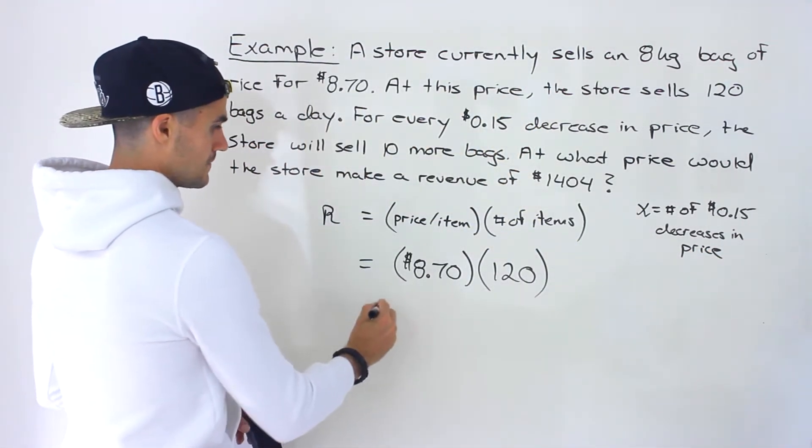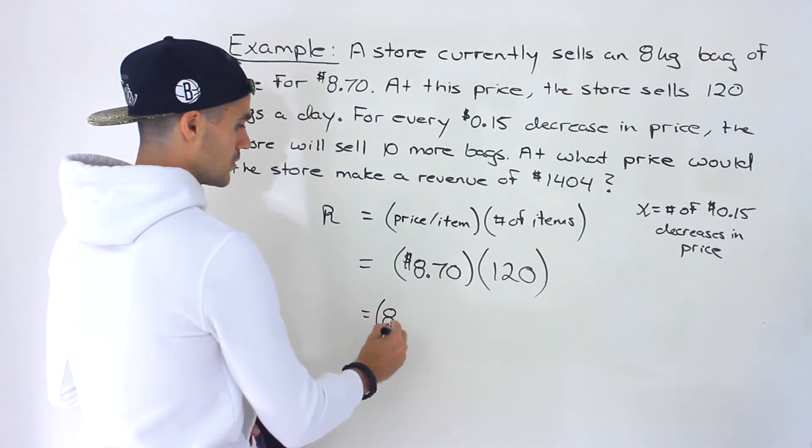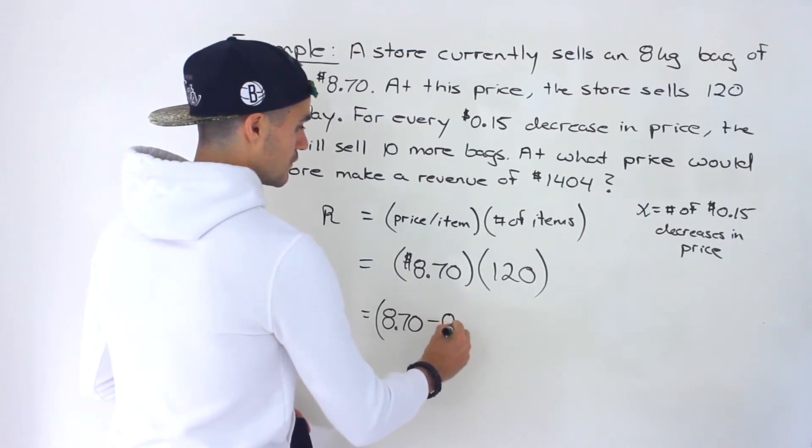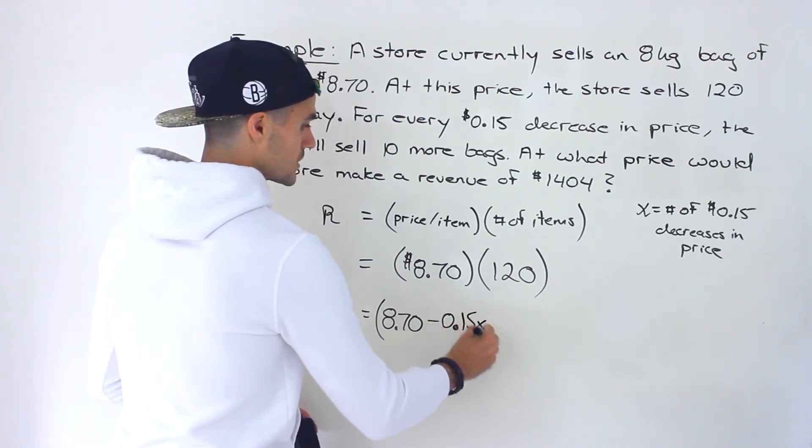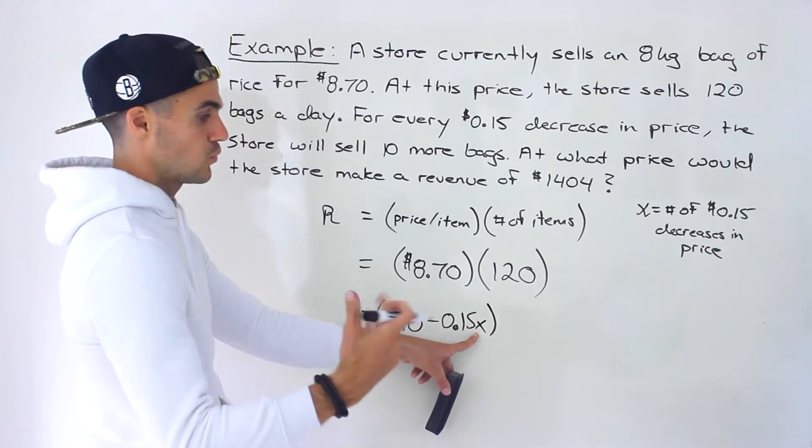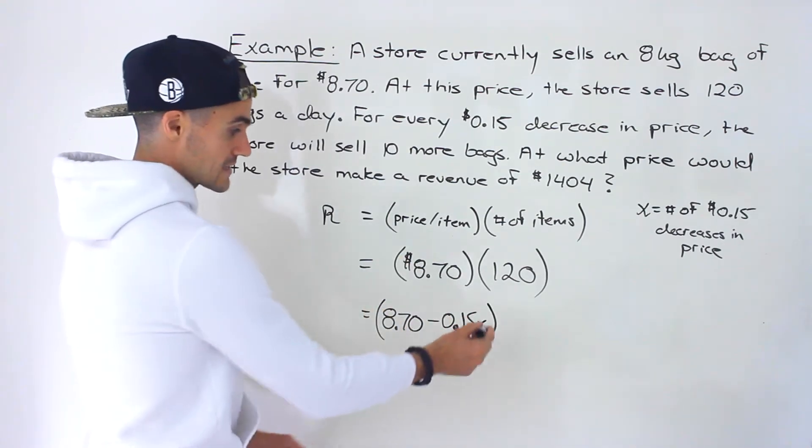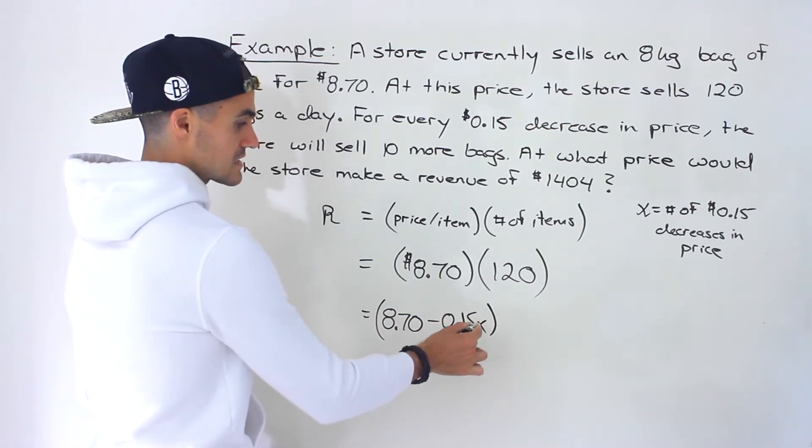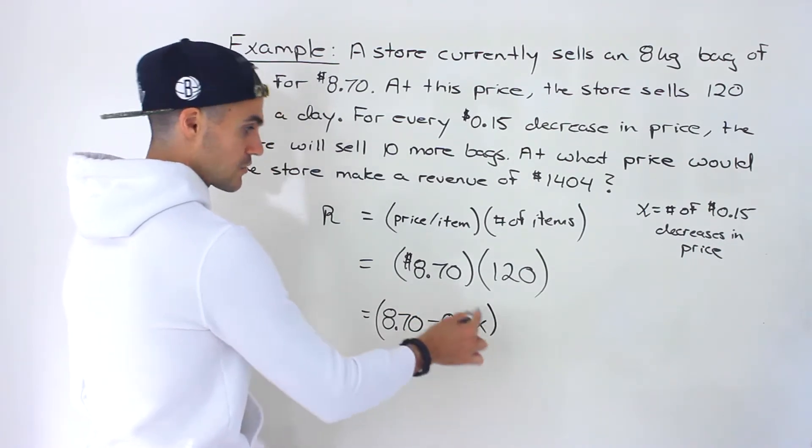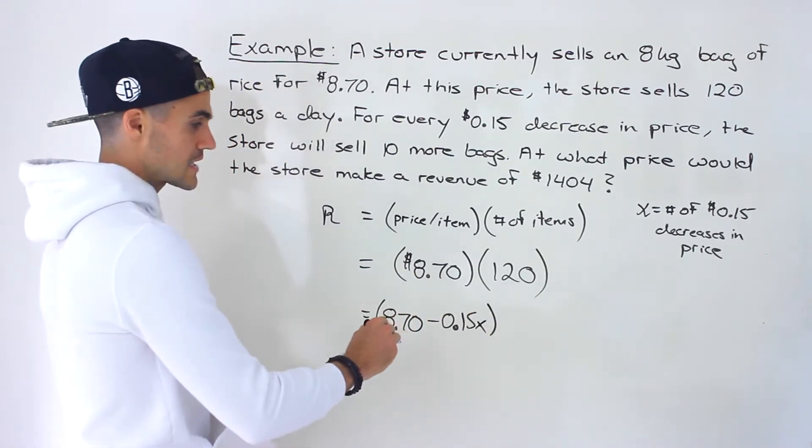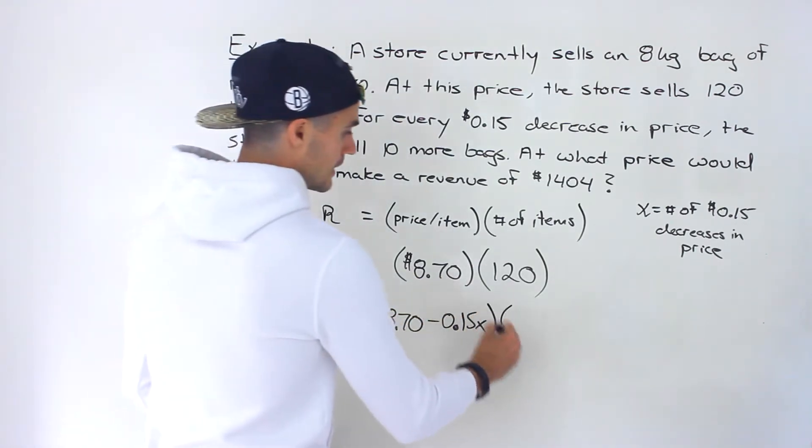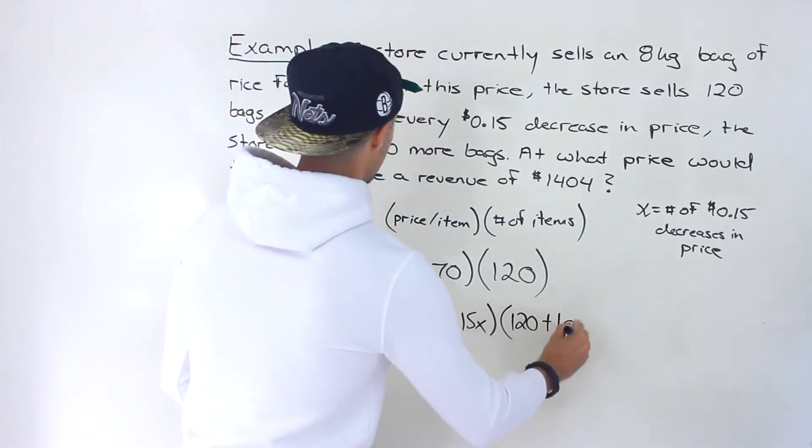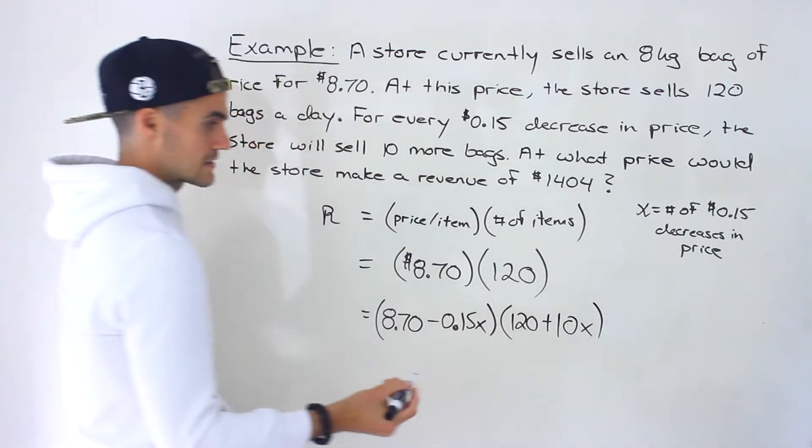So what we can say here is that we have this current price of $8.70. For every 15 cent decrease, how many of those are going to be? So this X could be one, two, three. If X's value is one, then we're decreasing the price by 15 cents. If it's two, then we're decreasing it by 30 cents. If it's three, decreasing it by 45 cents. For every one of those decreases in prices, we're going to sell 10 more bags.